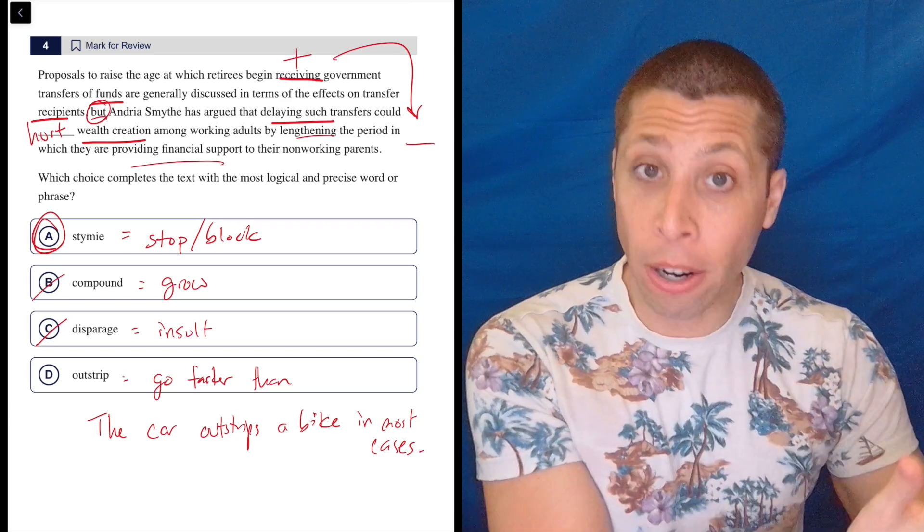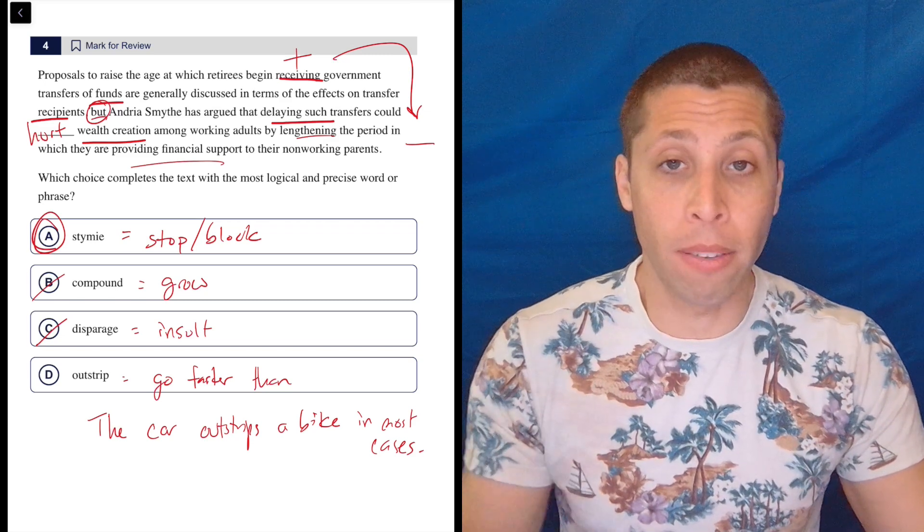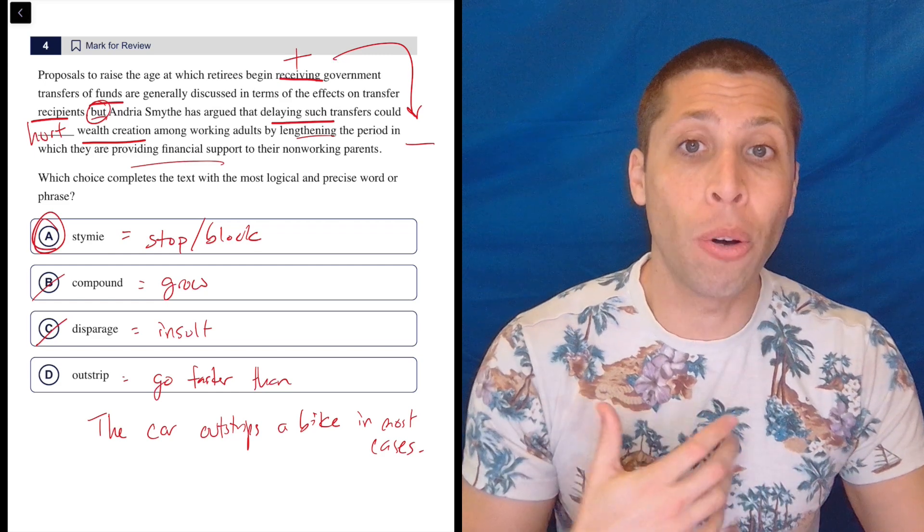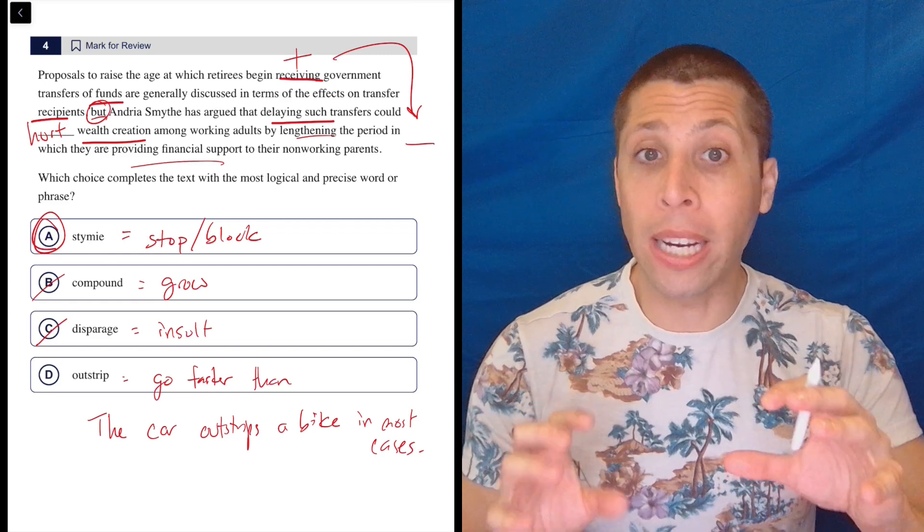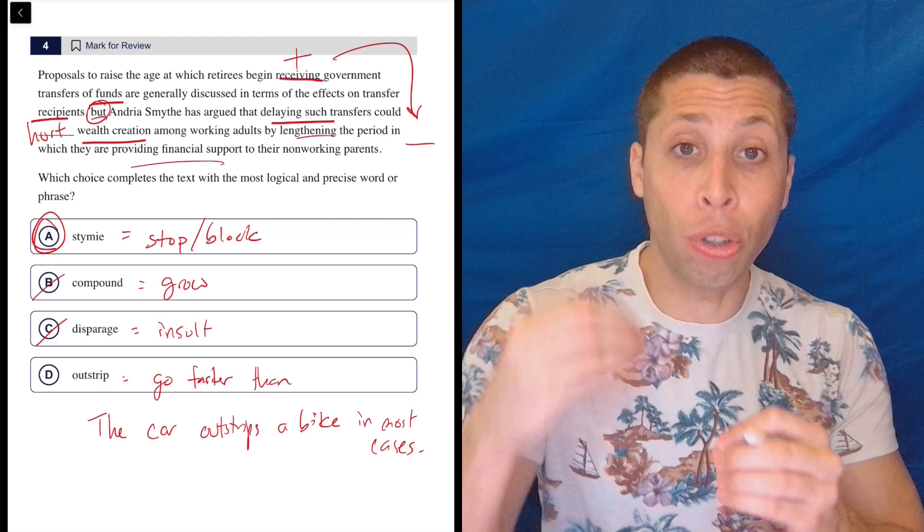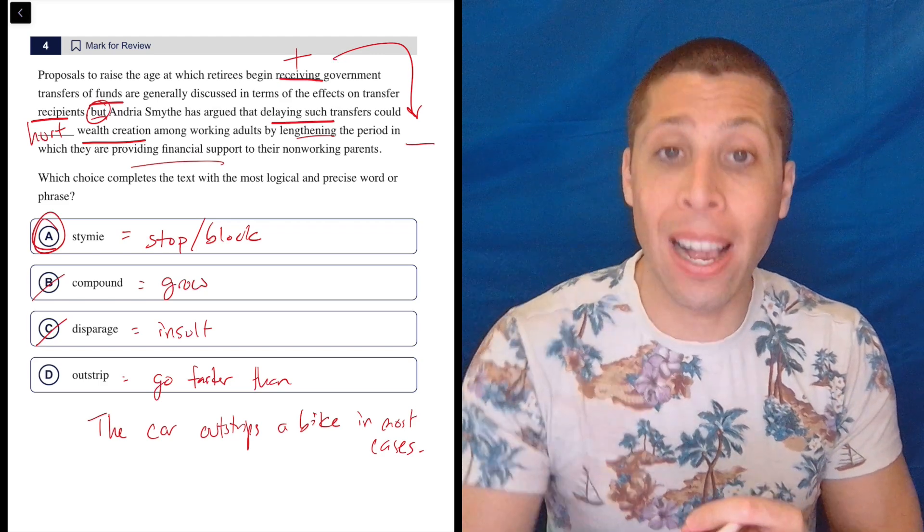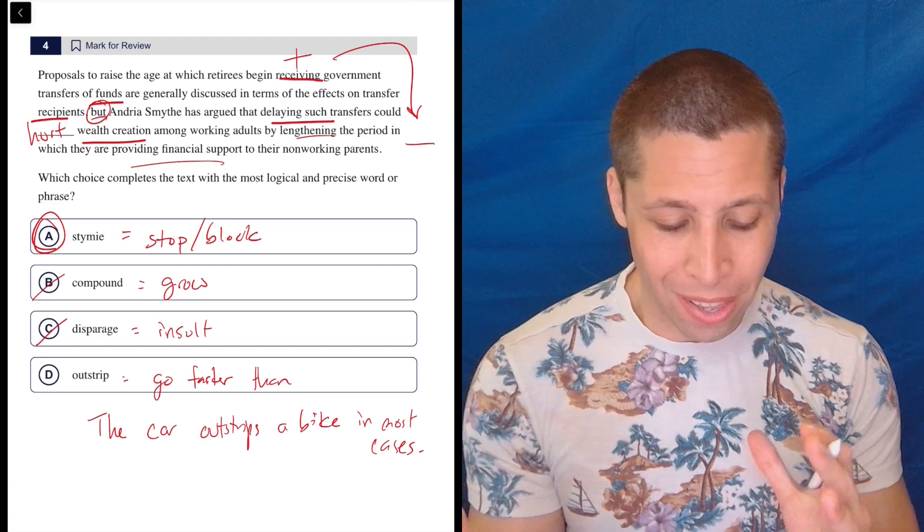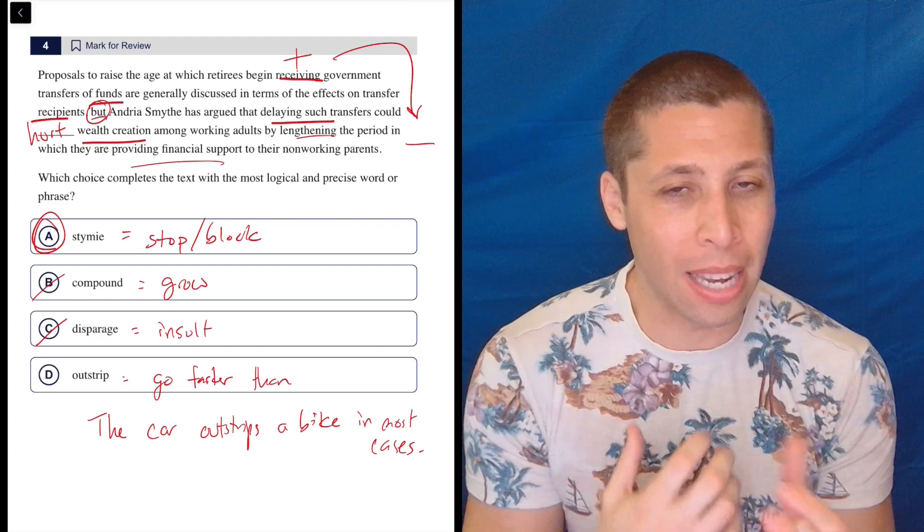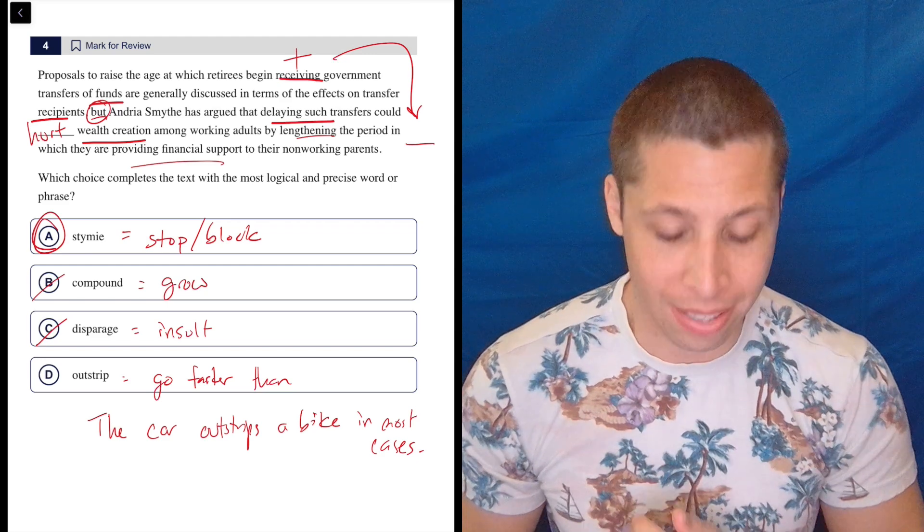If we delayed the transfers, then wealth creation among the older population would outstrip wealth creation among the younger population, because the younger population has to take care of the older population. So they're spending money, they're not getting money. So you could compare two different groups of people and say wealth creation in one group outstrips, outpaces, is faster than the other group. But here we're really just talking about one group, and so there isn't this comparison element. And so outstrip just doesn't really make any sense.